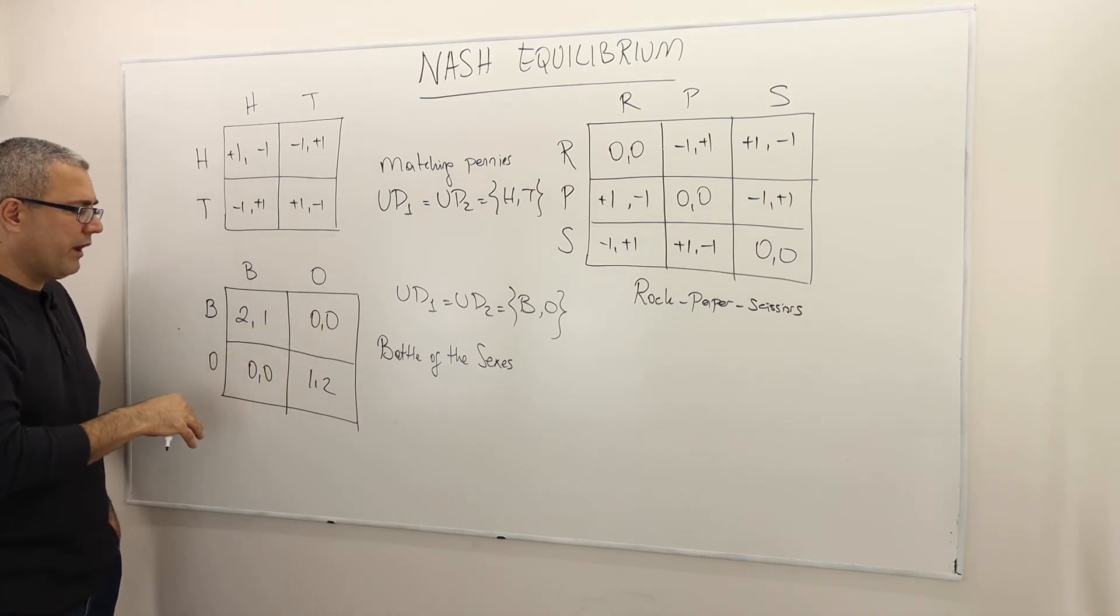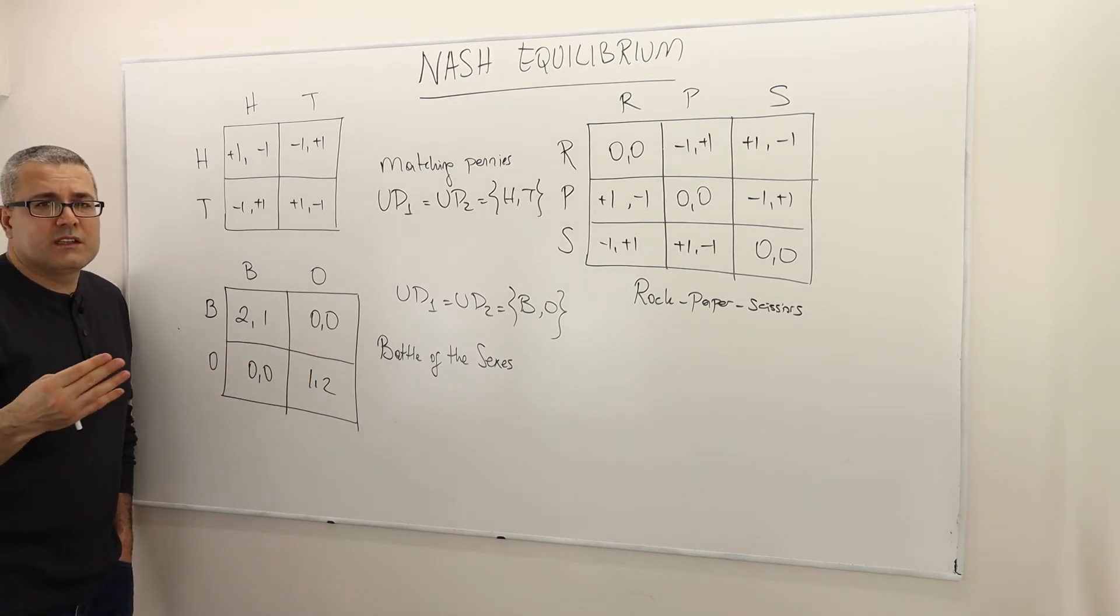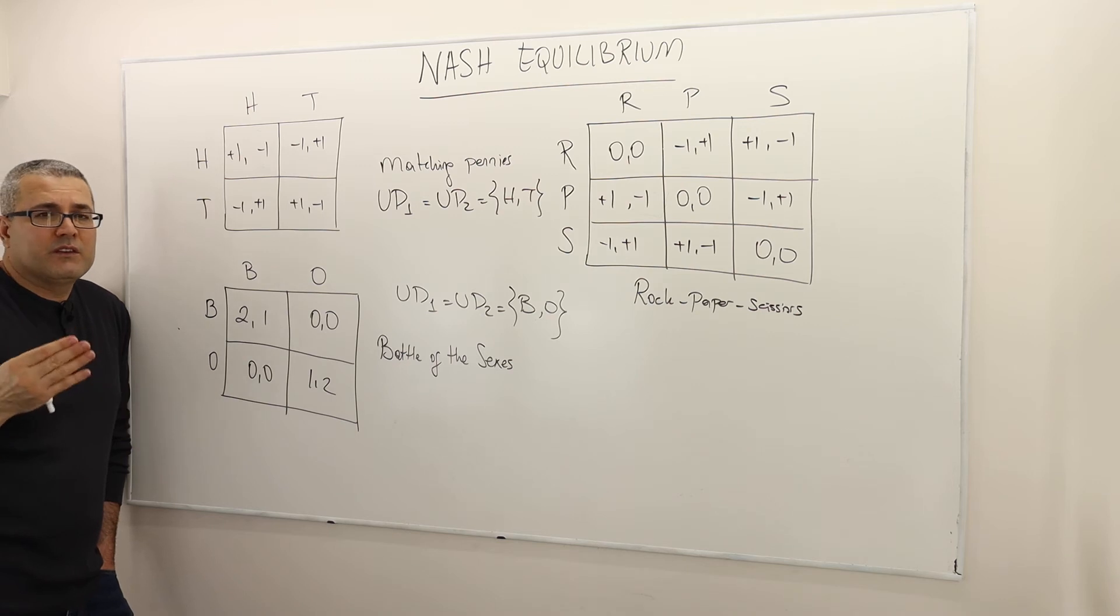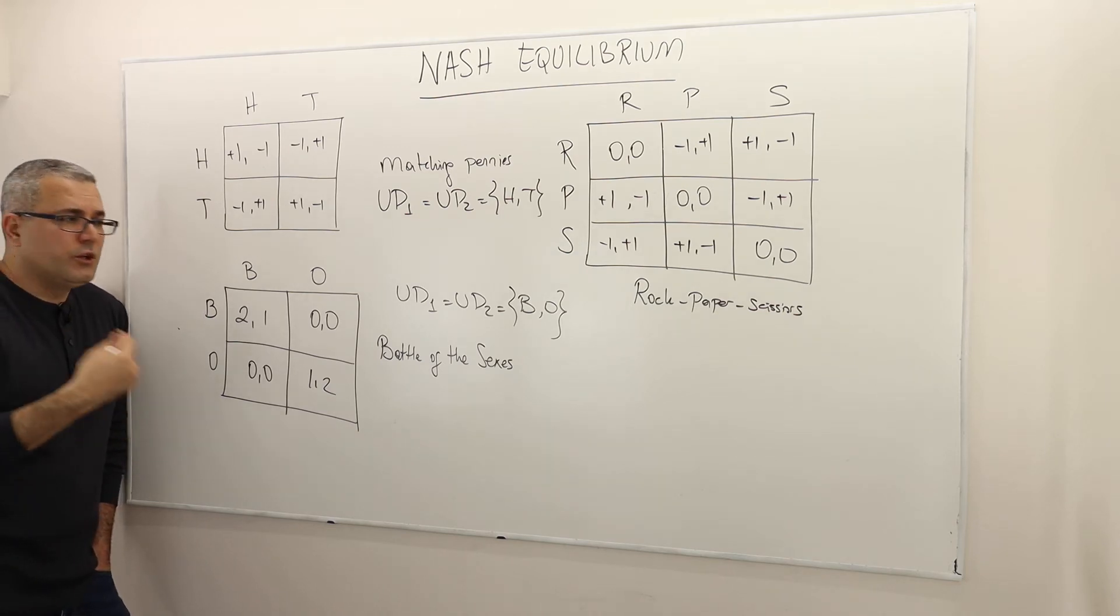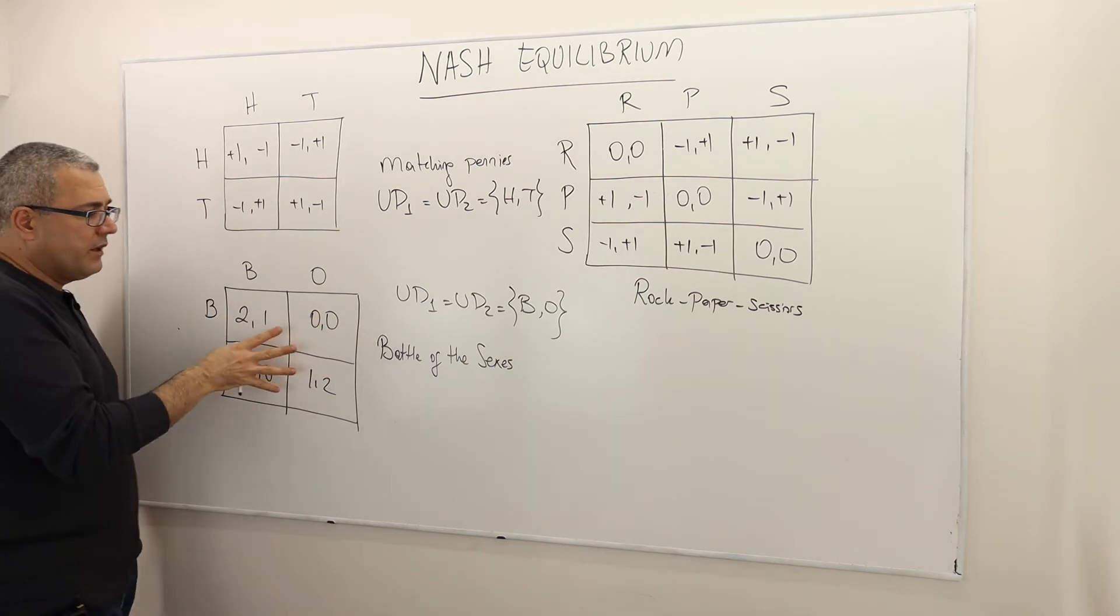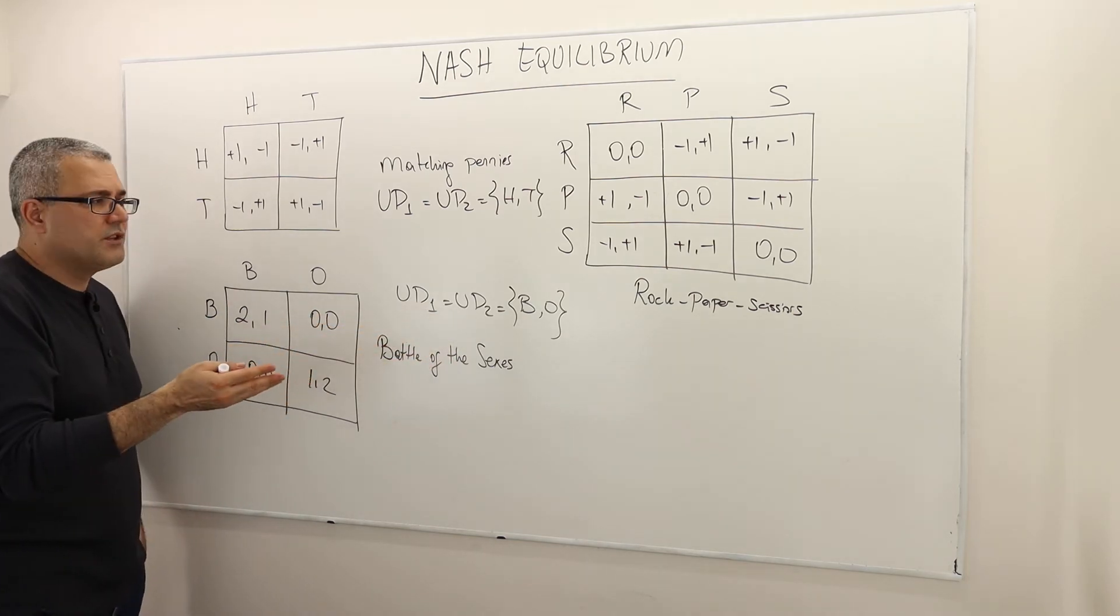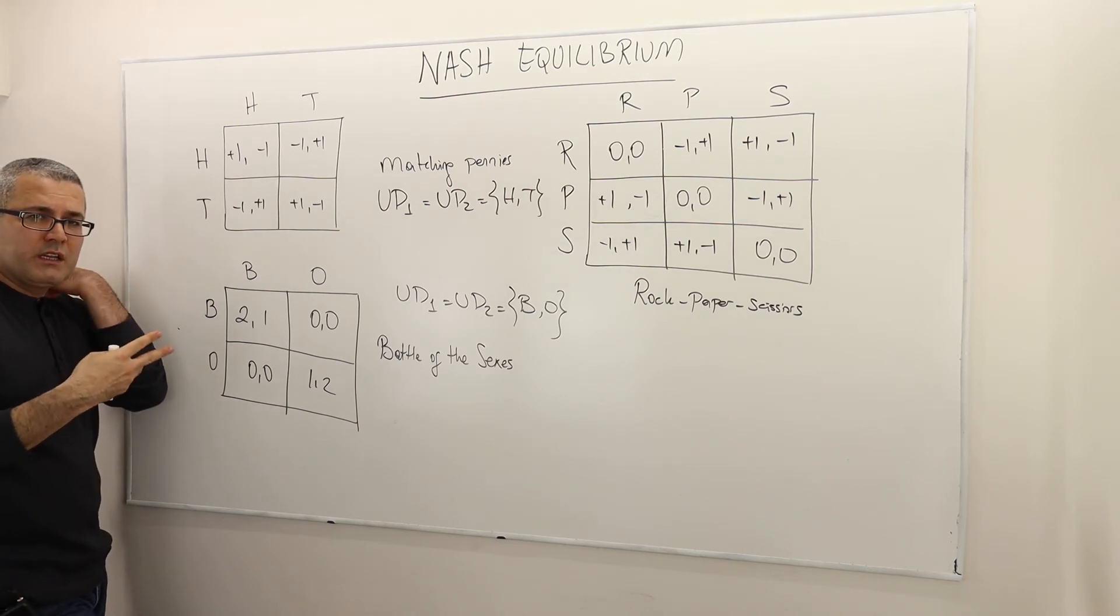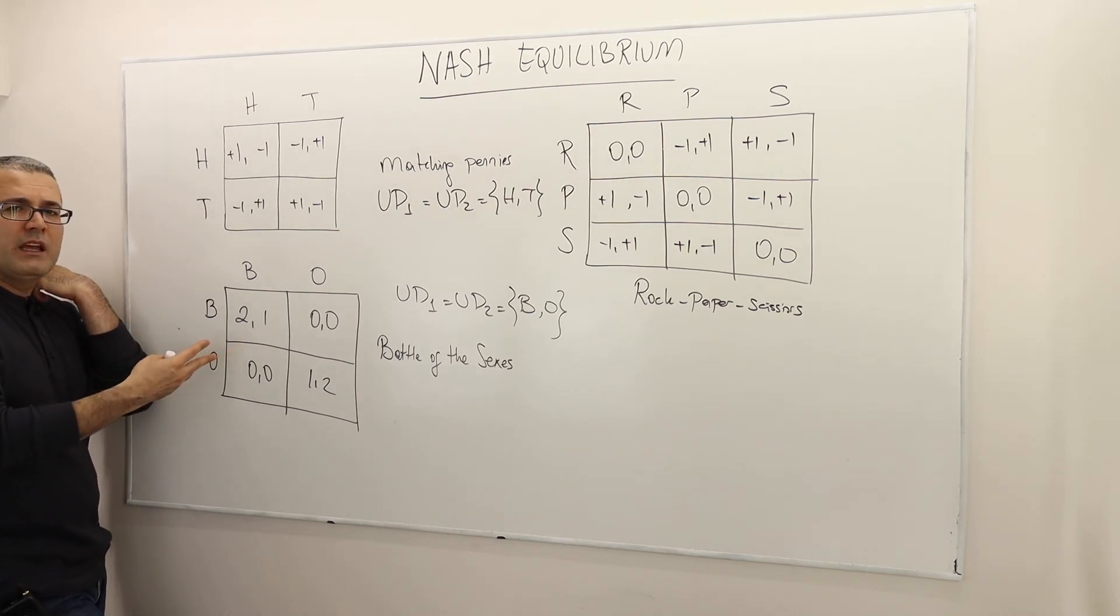And for some reason, let's suppose they cannot communicate. So they need to buy the ticket right now because it's lost, say, five minutes. And for some reason, they cannot reach out to each other. And so they have to choose their actions simultaneously, for example. And this is well. OK, so again, so here there is no dominated strategy, meaning both strategies are, in fact, best response to some belief. And that means if you apply the idea of iterated elimination of strictly dominated strategies, you're not going to be able to eliminate any strategy.